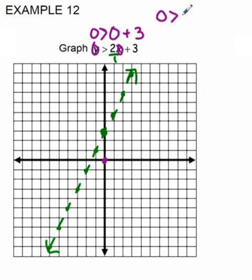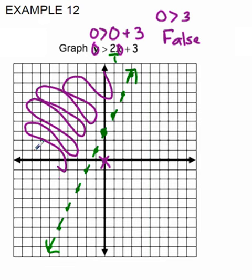So 0 is greater than 3. That is a false statement. So I don't want to shade this side of the line where 0 was, because that didn't work. I want to shade the opposite side of our graphed line. That will be your solution area.